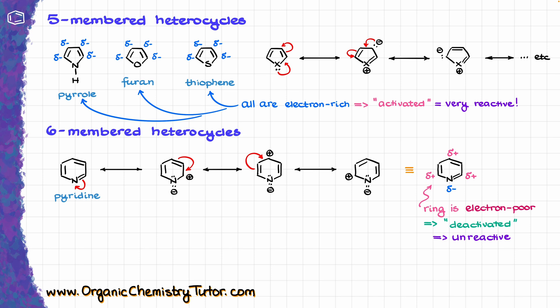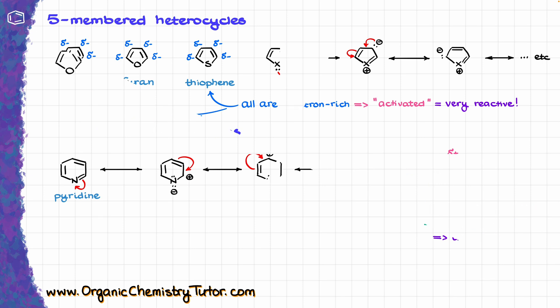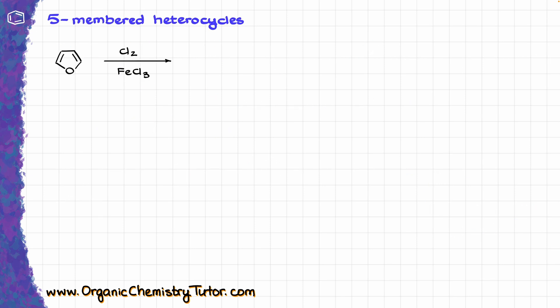But reactivity aside, another important thing for us to know is where exactly the reaction is going to happen — in other words, the regioselectivity of this reaction. So let's go back to a 5-membered ring and do a typical electrophilic aromatic substitution, which in this case is just a simple halogenation. The first step in any halogenation reaction is going to be the formation of my electrophile. Once that electrophile attacks my aromatic ring, I'm going to have two different options. My option number one is going to put chlorine on my aromatic ring right next to my heteroatom.